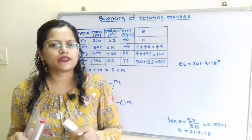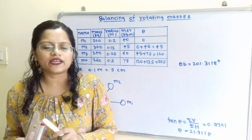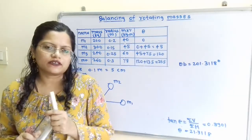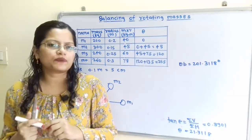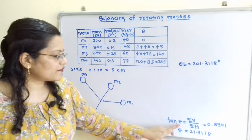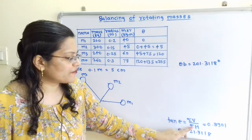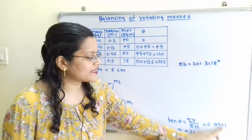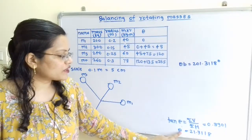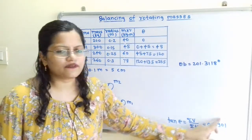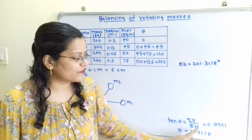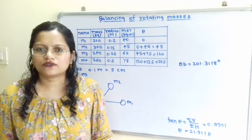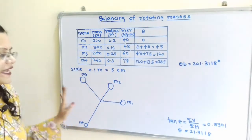From ΣV and ΣH we can find the angle of the resultant: tan θ = ΣV / ΣH = 8.4391 / 21.6319 = 0.3901, so θ = 21.3118°. This will be shown in the space diagram.